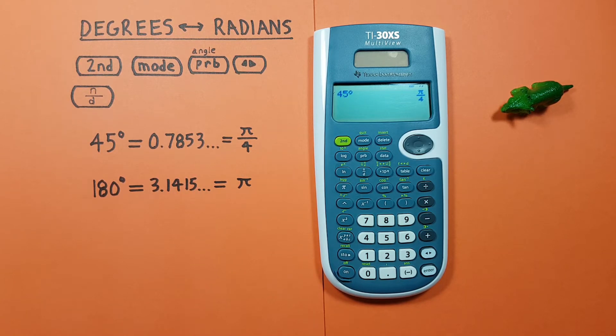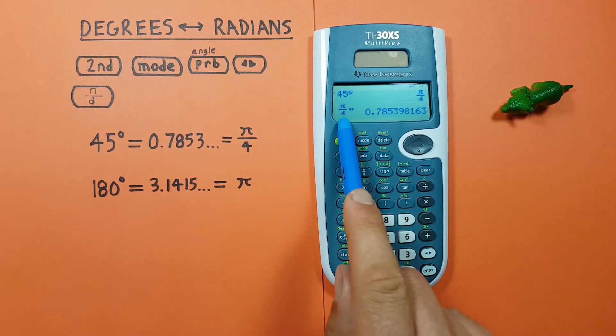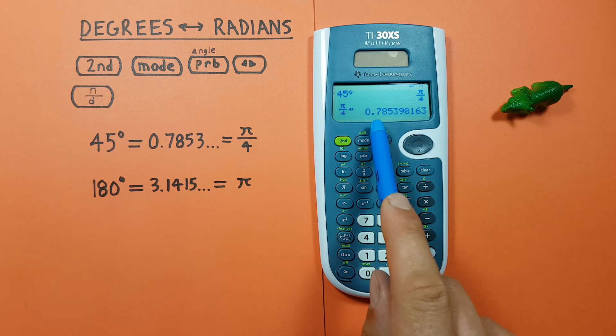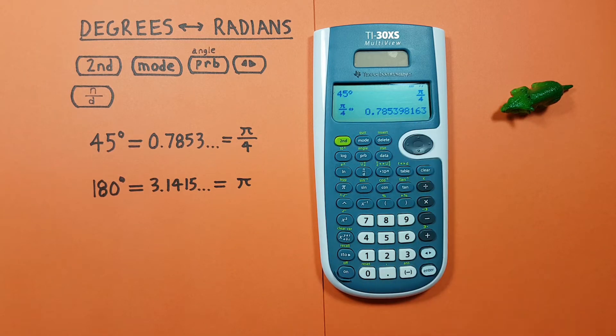If we want that as a decimal, we can press the conversion key here, and see pi over 4 converts to 0.7853, etc., radians.